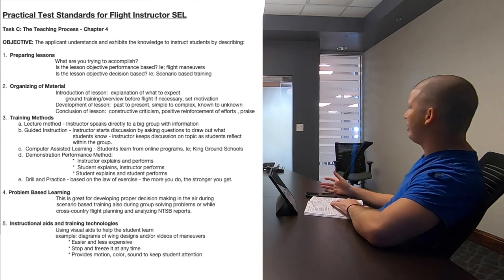In a group ground school, when everyone's participating, you can ask questions at the end of the lecture about topics most students are weak on — like weather. Everybody struggles with weather because there's so much to learn. You push everybody towards that topic. Then there's the computer-assisted learning method — like King's Ground School — where there's no interaction from a CFI, just you on the computer.